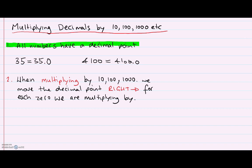The other thing that we have to understand, this is what we're trying to learn in this lesson, is that when we multiply by a ten, a hundred, or a thousand, we need to move the decimal point to the right for each zero that we are multiplying by.